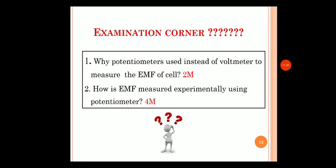Now let us come to the examination corner. Possible questions include: Why is a potentiometer used instead of a voltmeter to measure EMF of the cell? — because the voltmeter uses some EMF to overcome internal resistance, which changes the concentration of the electrolyte. The second question is: How is EMF measured experimentally using a potentiometer? — you must draw a neat labeled diagram and explain the principle and procedure. In the next video, we will understand the working and construction of the standard cell, the Weston cadmium cell. Thank you.